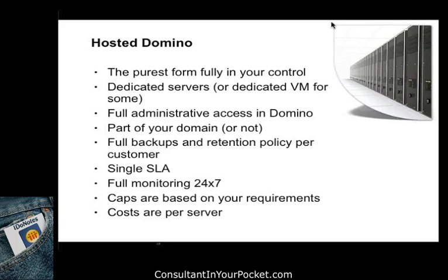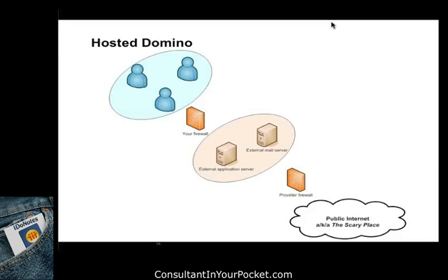Let's talk architecture and design — that's probably the biggest part. This is a simple diagram for purely hosted Domino. You guys are behind your firewall, accessing external mail and application servers. Whoever the provider has as a firewall, off you go to the public internet — which we'll call the 'scary place' throughout. In a pure hosted environment when you're moving all your data out, you've got to sit behind your own firewalls, open up the right connectivity, and these servers are then protected and available either to the internet or not, depending on how you want your infrastructure built.